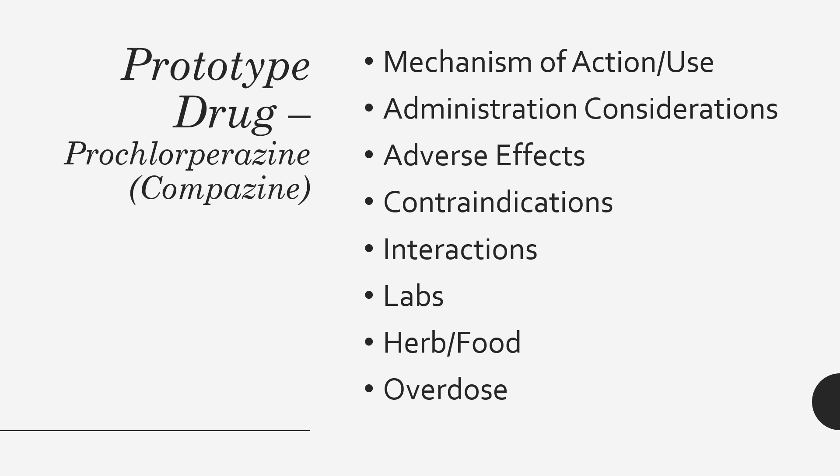Compazine does have a black box warning. There is an increased risk of death with geriatric clients who have dementia, because they may already be treated with other conventional phenothiazines — adding this on top compounds that effect. Contraindications: do not use with hypersensitivity, if a client is comatose or has profound CNS depression, or if they have severe hepatic or cardiac impairment. Drug-drug interactions: do not use with alcohol or other CNS depressants. No lab or herb-food considerations at this time. For overdose, if a client is experiencing extra-pyramidal symptoms, treat with an anti-Parkinson drug; if they have CNS depression, give a CNS stimulant.